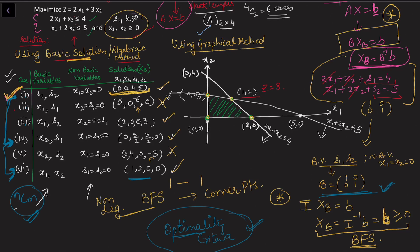So in this example, we start from the corner where s1 and s2 are basic variables and x1 = x2 = 0. We then move to an adjacent BFS, check the optimality criteria, and if improvement is possible, move to the next adjacent point. When the optimality criteria confirm the current solution cannot be improved, we stop — without needing to check all other corner points.